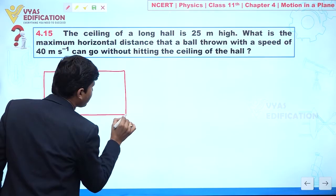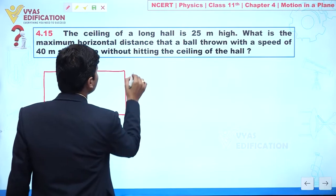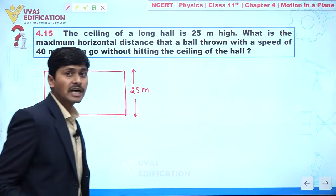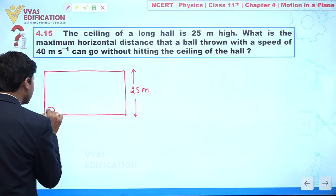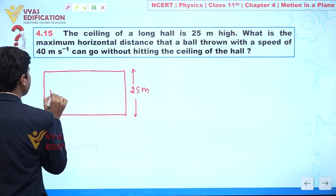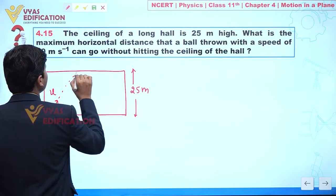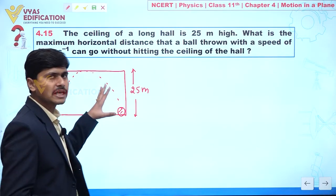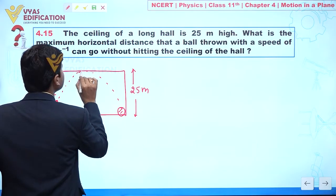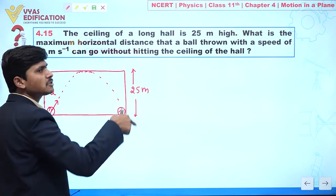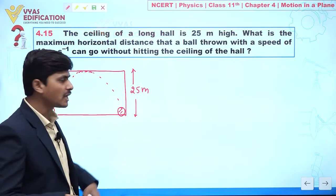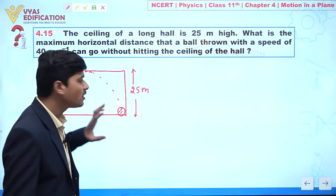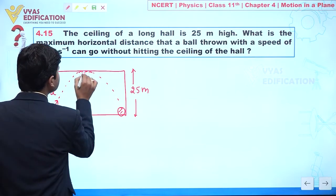Let's suppose here we have a hall and the height of this hall is given as 25 meters. We are throwing a ball with some initial velocity from a point. This ball is going without hitting the ceiling — it just moves just past or just near to the ceiling — and then strikes the ground of the hall again.